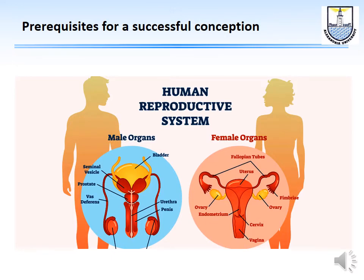Now let's look at the prerequisites for a successful conception. The husband should produce sperm — spermatozoa are produced by the testes and ejaculated in fluid produced by the prostate and seminal vesicle. On the female side, the ovary produces oocytes which travel to the fimbriae of the fallopian tube where fertilization occurs, then the fertilized ovum passes to the uterine cavity for implantation, and pregnancy continues for approximately 280 days.